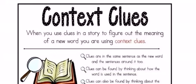When you use clues in a story to figure out the meaning of a new word, you are using context clues. Clues are in the same sentence as the new word and sentences around it too. Clues can be found by thinking about how the word is used in the sentence. Clues can also be found by thinking about the main idea and details of a story.